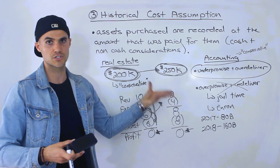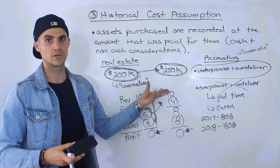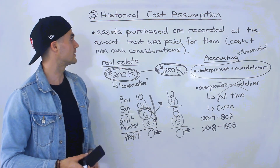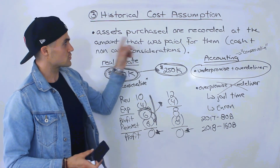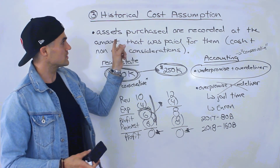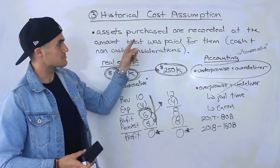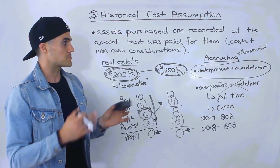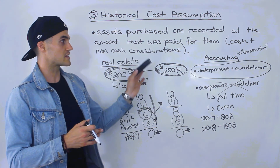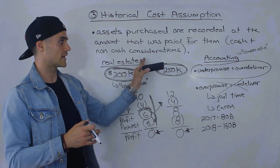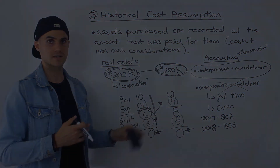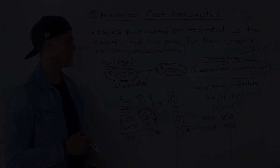It's basically like complex shopping — you're looking for a deal. Anyway, the historical cost assumption: assets purchased are recorded at the amount that was paid for them, whether that's for cash, non-cash considerations, or a mix of both.